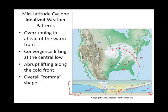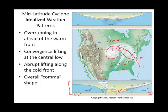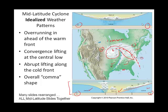Another feature of the mid-latitude cyclone is what we call the comma effect, or comma shape. That comma shape right there is characteristic of a mid-latitude cyclone. The segment between G and F is shown up here.